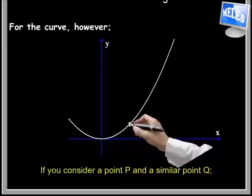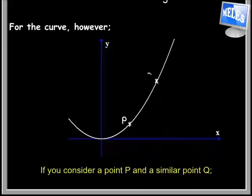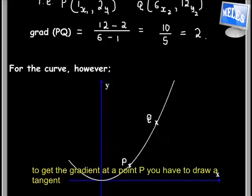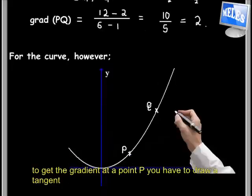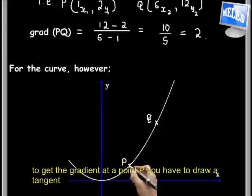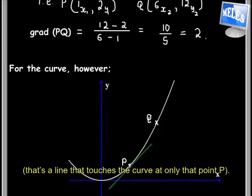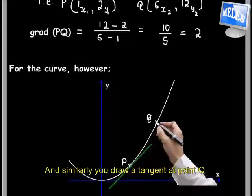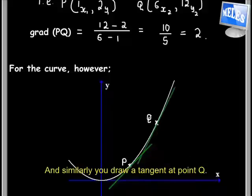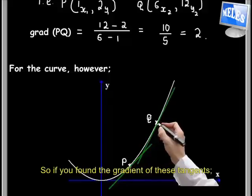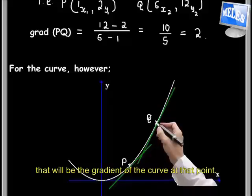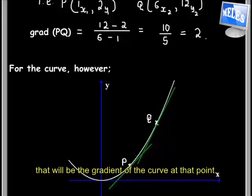If you consider point P and a similar point Q, to get the gradient at point P, you have to draw a tangent—that's a line that touches the curve at only that point, P—and similarly, you draw a tangent at Q.